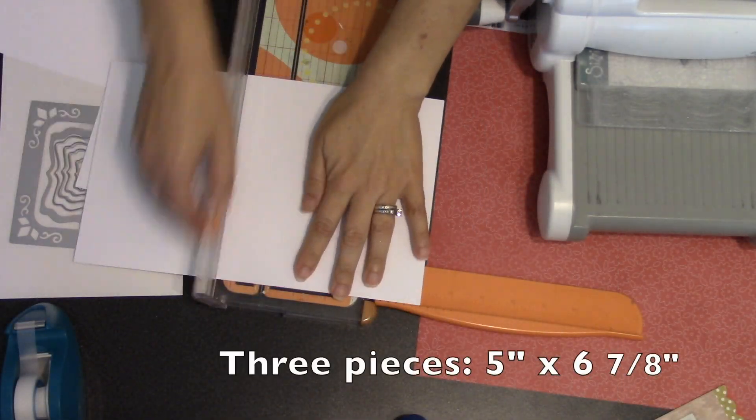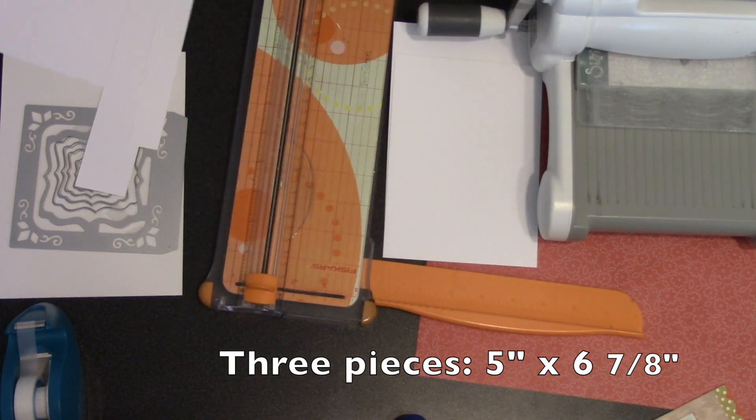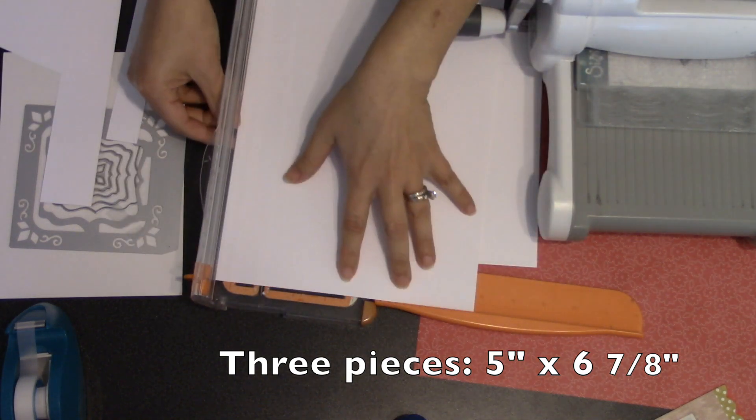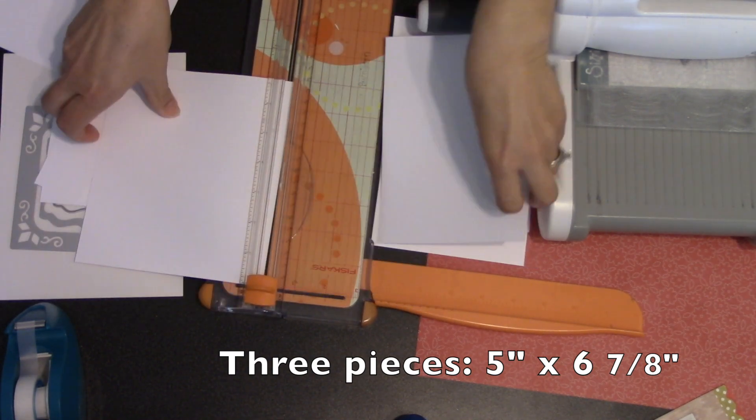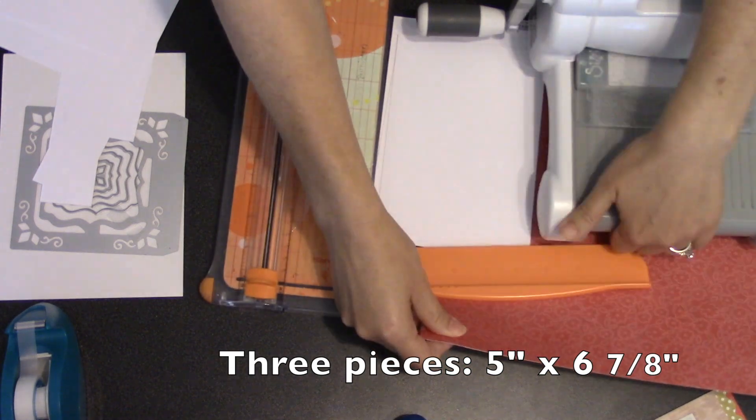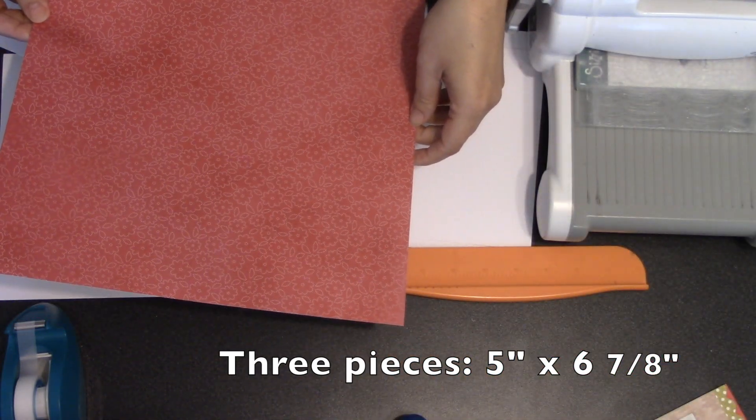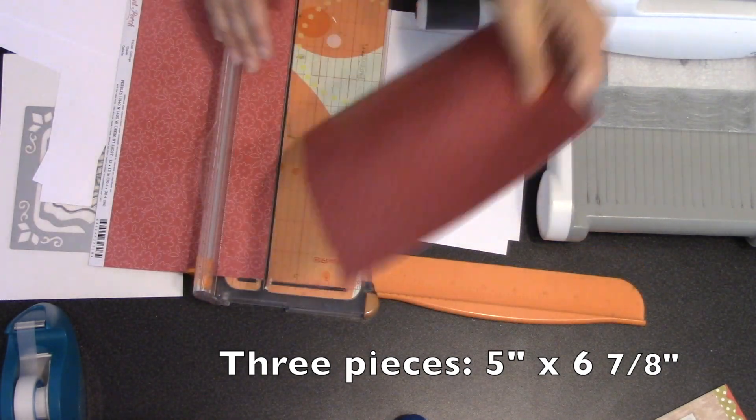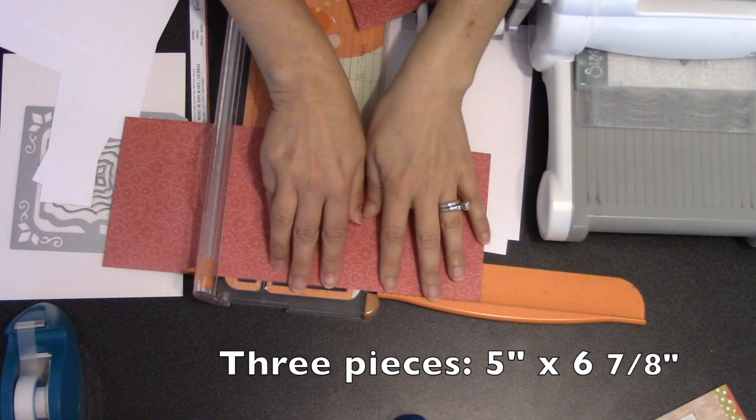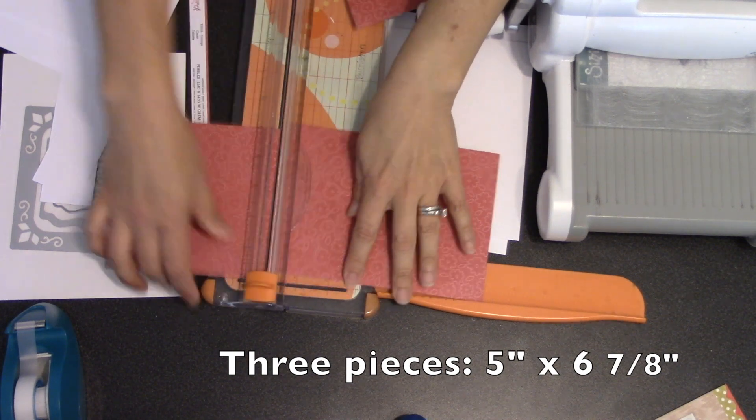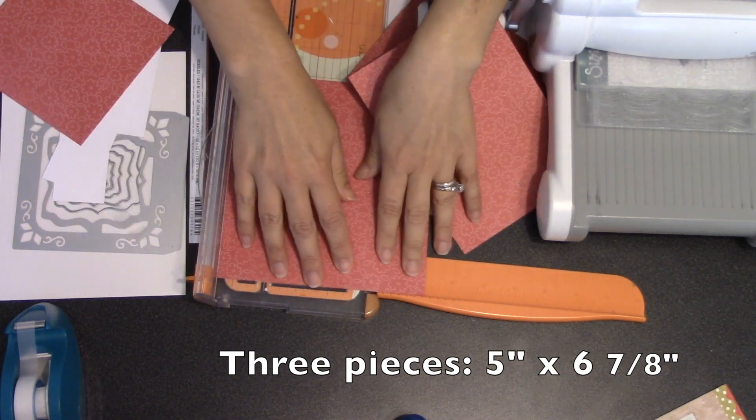I'm starting with a pretty heavyweight cardstock, and I need to get three pieces, and they are five inches wide by six and seven eighths of an inch long. And I know what you're thinking. You're thinking, why? Why, Karen? Why can't I just round up to seven inches? It'd be so much easier. And the answer is, your tabs will not line up on your staggered fancy accordion. If you go the full seven inches, you've got to come back in one eighth of an inch and make your pieces five inches wide by six and seven eighths inches long.